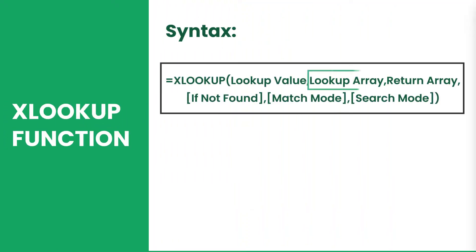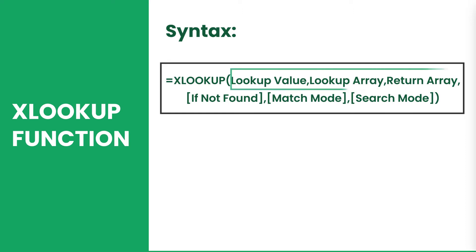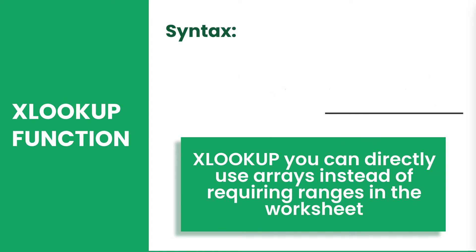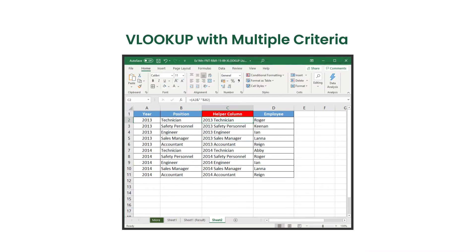XLOOKUP is a function that searches a value from a horizontal or vertical array, then returns a value from a specified return array. The function runs on six arguments, where only the first three are required. One of the advantages of XLOOKUP over other lookup functions is that you can directly use arrays instead of requiring ranges in the worksheet.